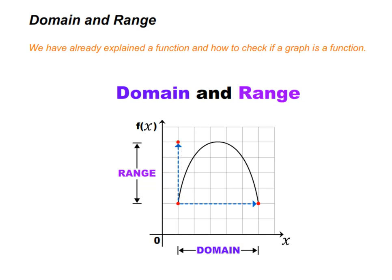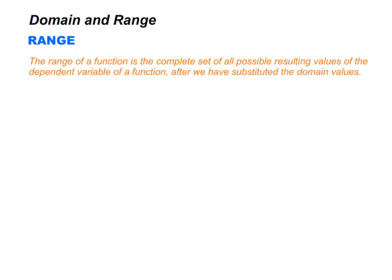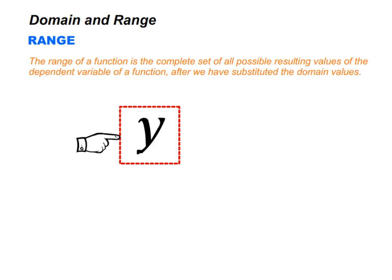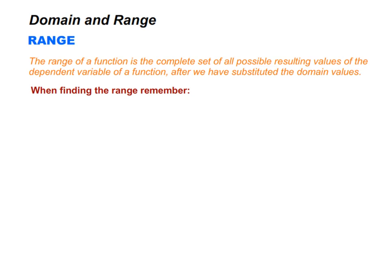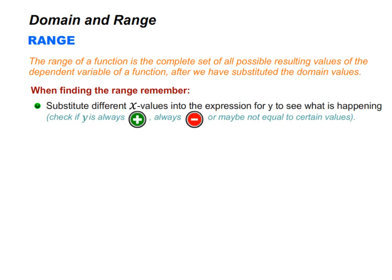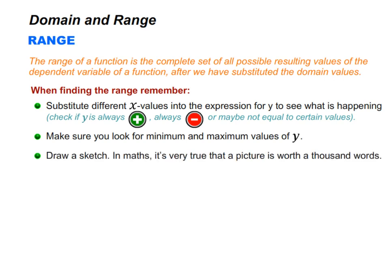The range of a function is the complete set of all possible resulting values of the dependent variable after we have substituted the domain values. Y is usually the dependent variable. When finding the range, remember: number one, substitute different x values into the expression for y to see what is happening — check if y is always positive, always negative, or not equal to certain values. Number two, look for minimum and maximum values of y. Number three, draw a sketch, because a picture is worth a thousand words.